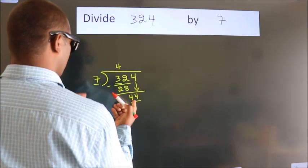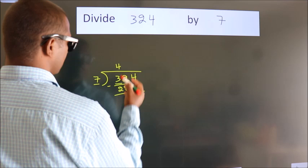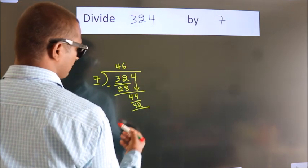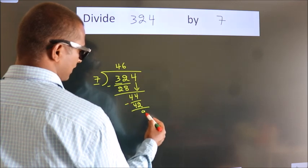A number close to 44 in the 7 table is 7 sixes, 42. Now, we subtract. We get 2.